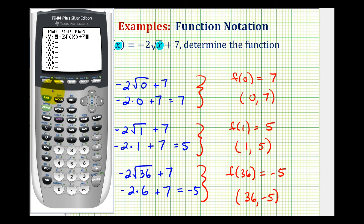Now, if we go to the table set by pressing second window, notice how I've changed the independent variable to ask. If ask is not highlighted, we just need to go down to this row, highlight ask, and press enter.